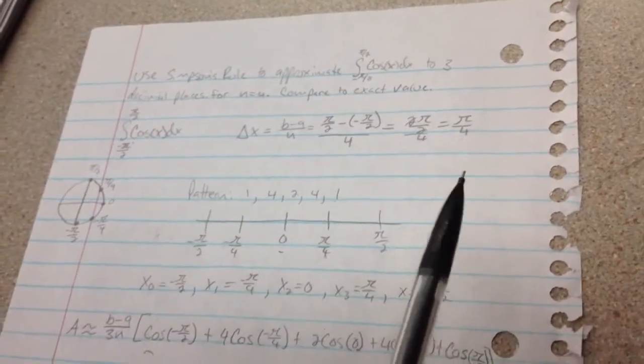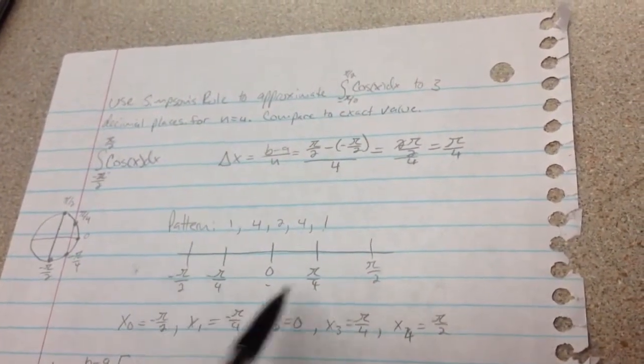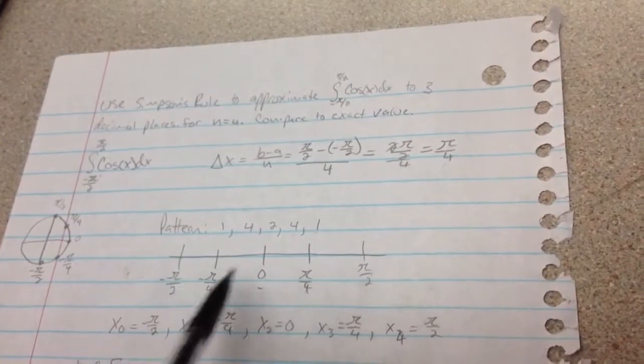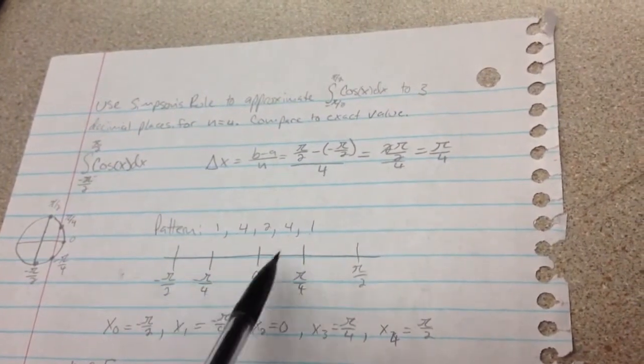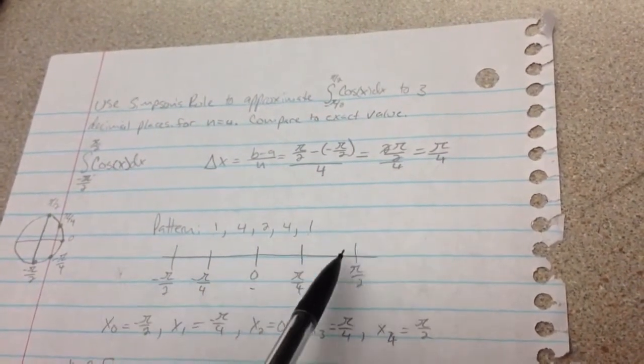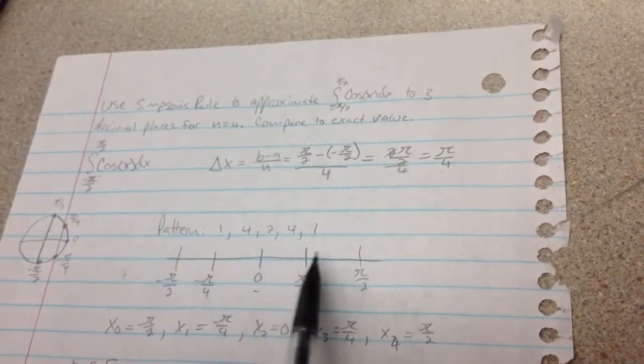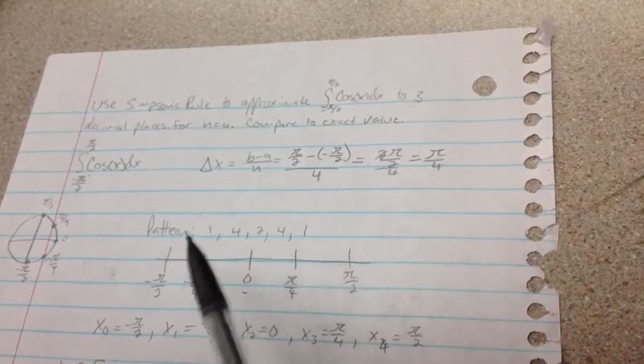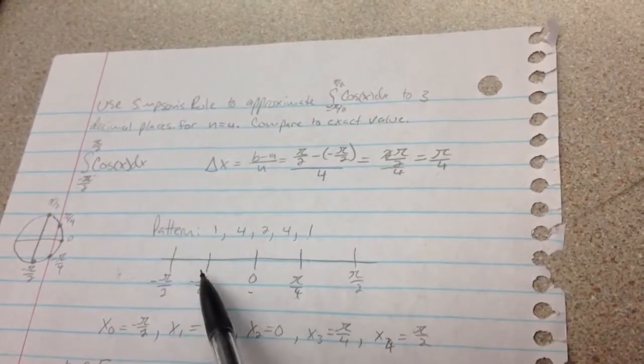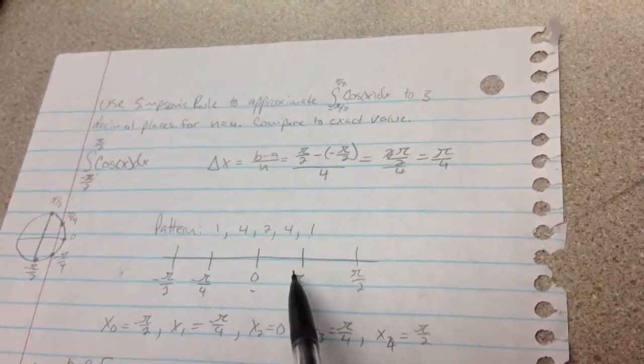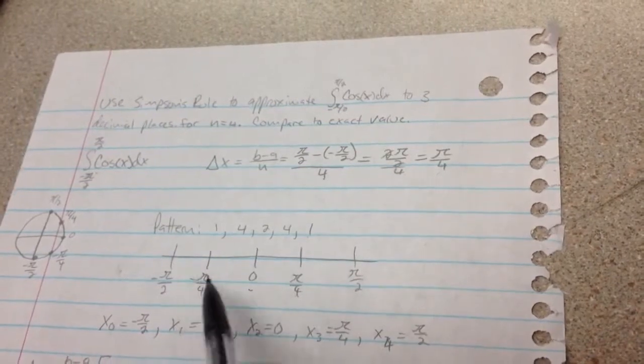So what we are going to do next is, I just kind of wrote this number line here so you can see we have 4 rectangles. And we know that each of these spaces is equal to pi over 4. Therefore we know that this is going to be negative pi over 4, this is going to be 0, and this is going to be pi over 4 because those are the halfway points.